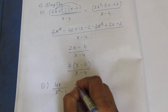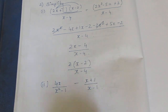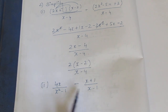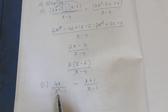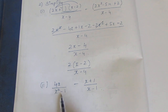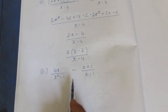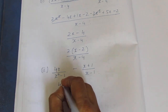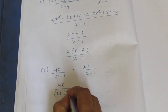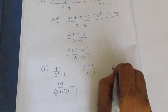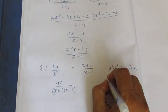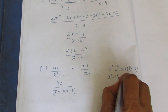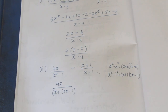Now we have 4x by x squared minus 1, minus x plus 1 by x minus 1. This is not the same denominator, so let's take LCM. We have a factorization formula: 4x by x plus 1 into x minus 1, because a squared minus b squared equals a plus b into a minus b. So x squared minus 1 equals x plus 1 into x minus 1.